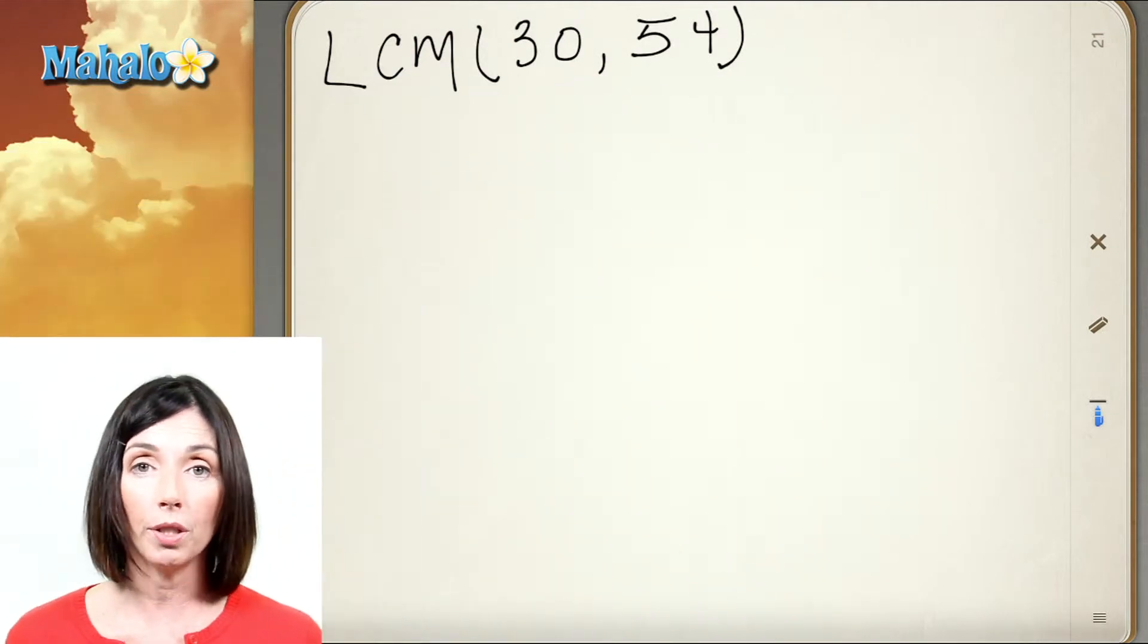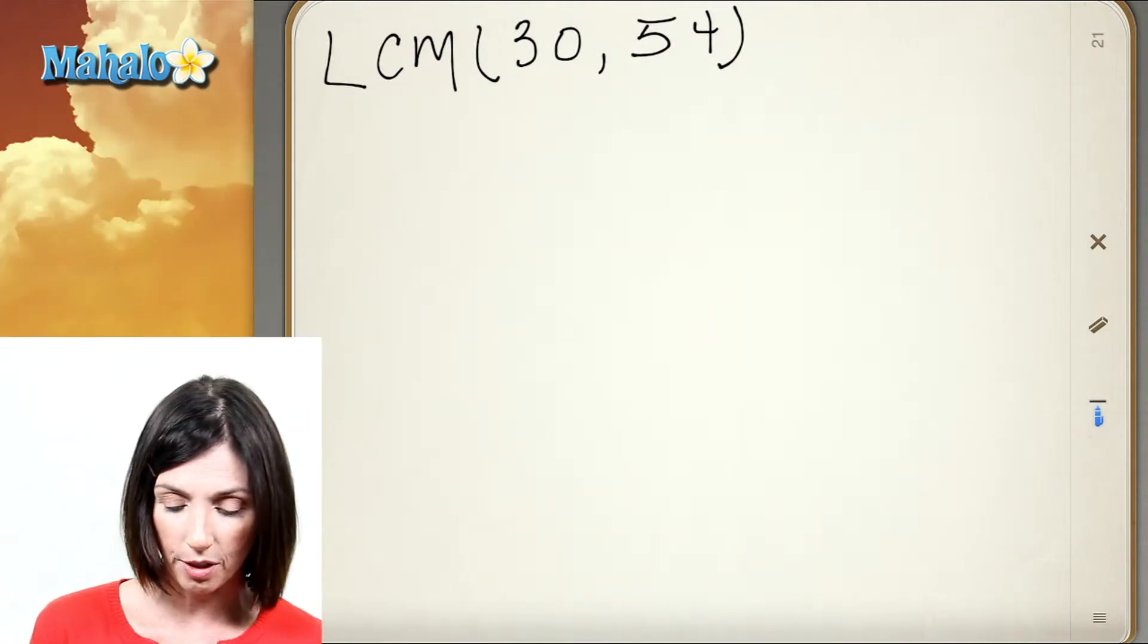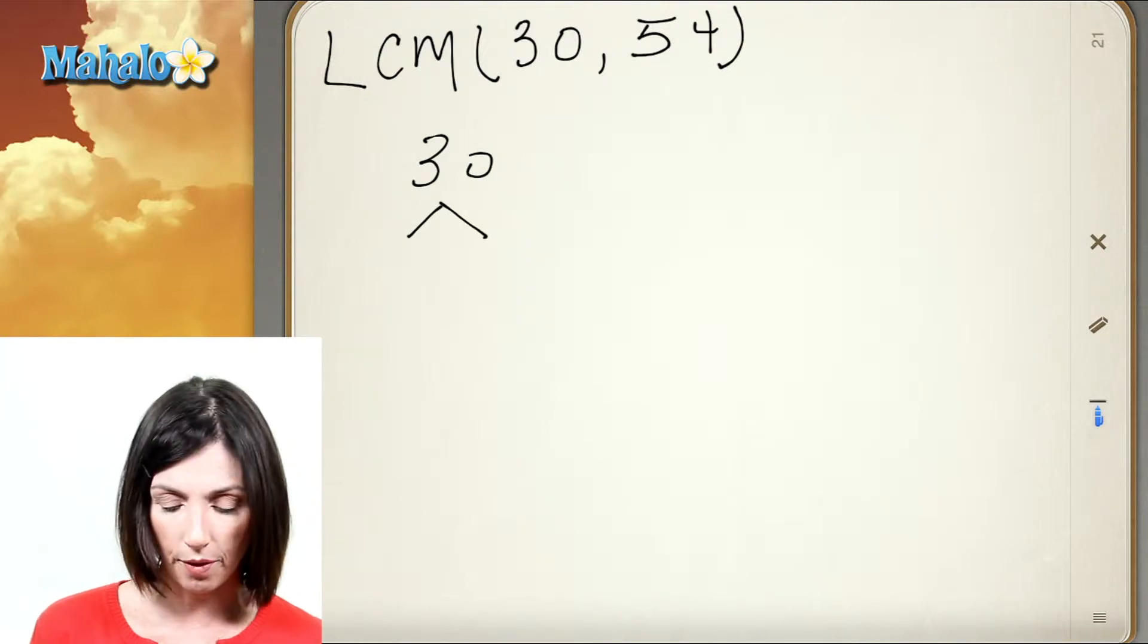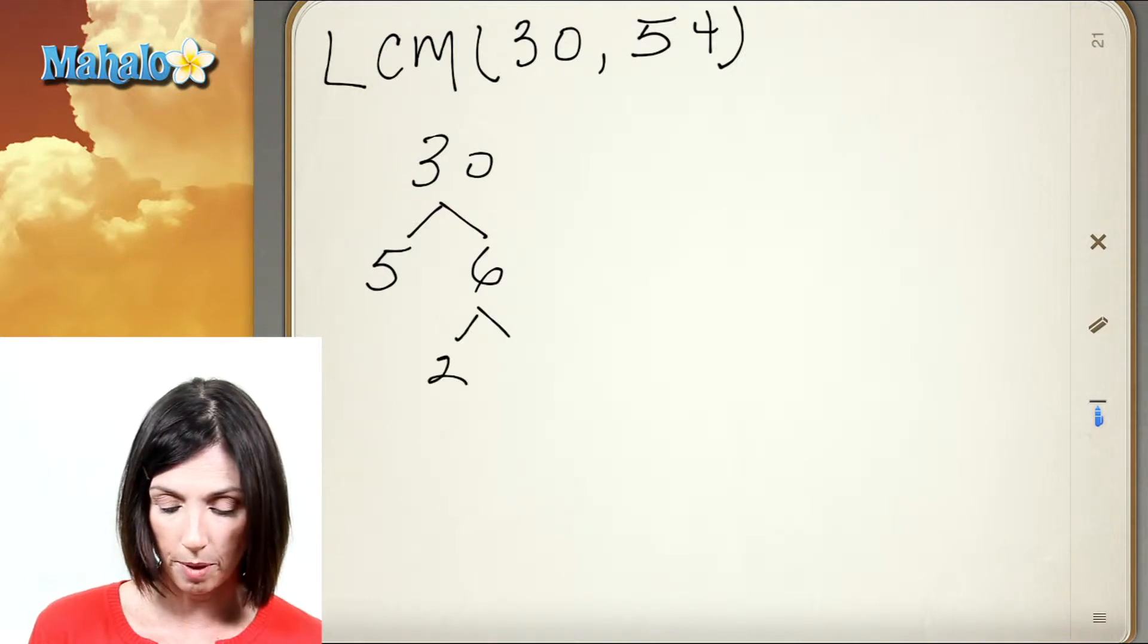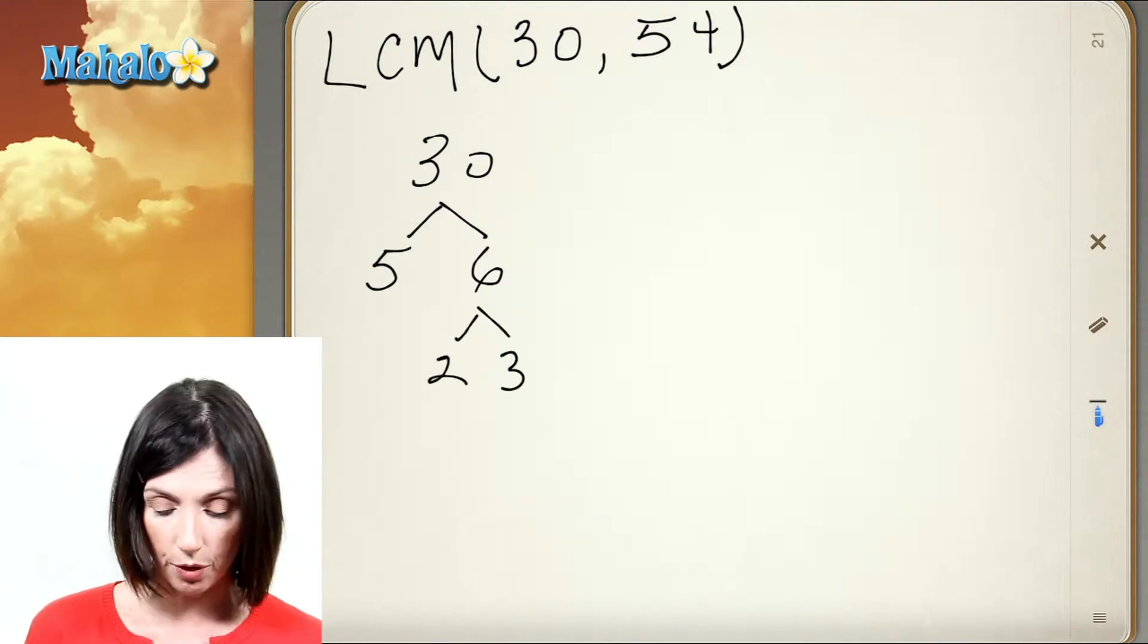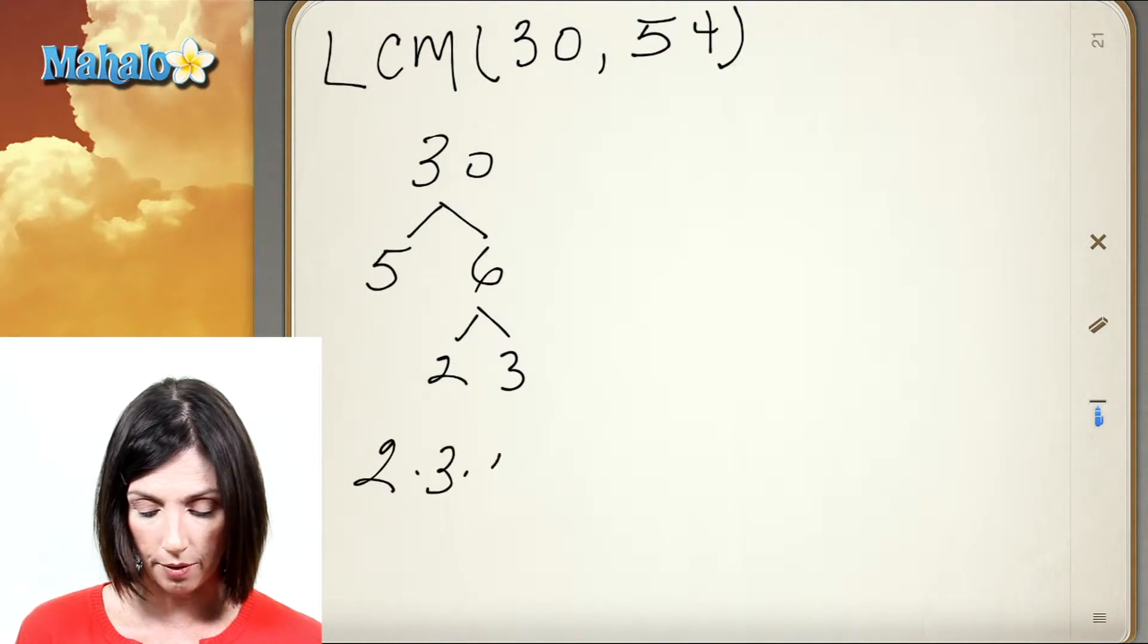So the first thing I'm going to do is find their prime factorization. So let's look at 30. 30 factors into 5 times 6 and then 6 factors into 2 times 3. And so now I have all prime numbers. So the prime factorization of 30 is 2 times 3 times 5.